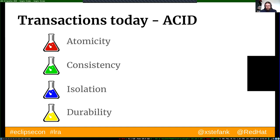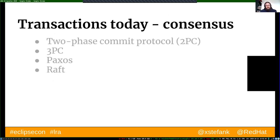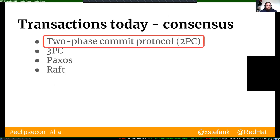Durability means all results need to be persisted in some durable storage. Behind every ACID transaction there is usually some consensus protocol. The most common one still used in modern systems is called the two-phase commit protocol. There are others that slightly mitigate its issues, like Paxos or Raft, but we will stick with 2PC.